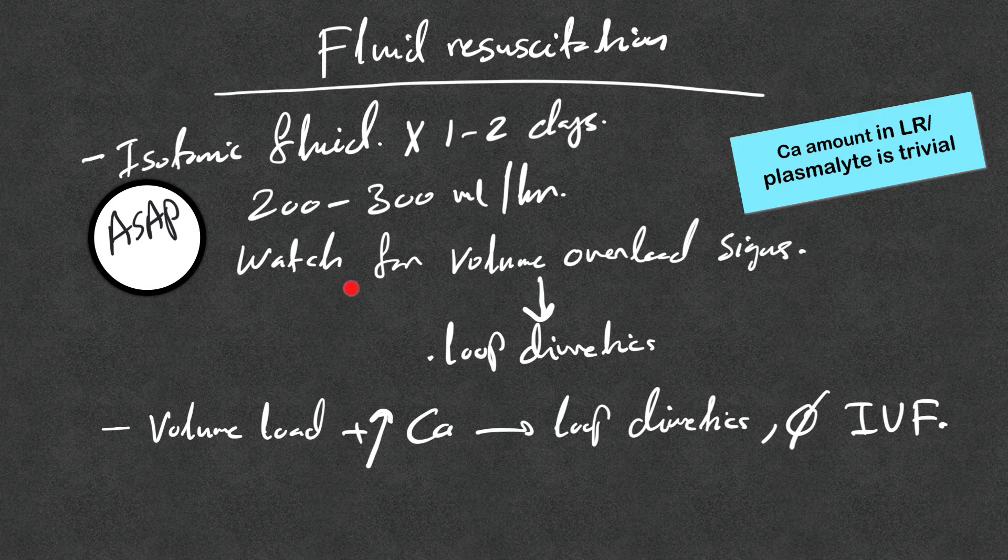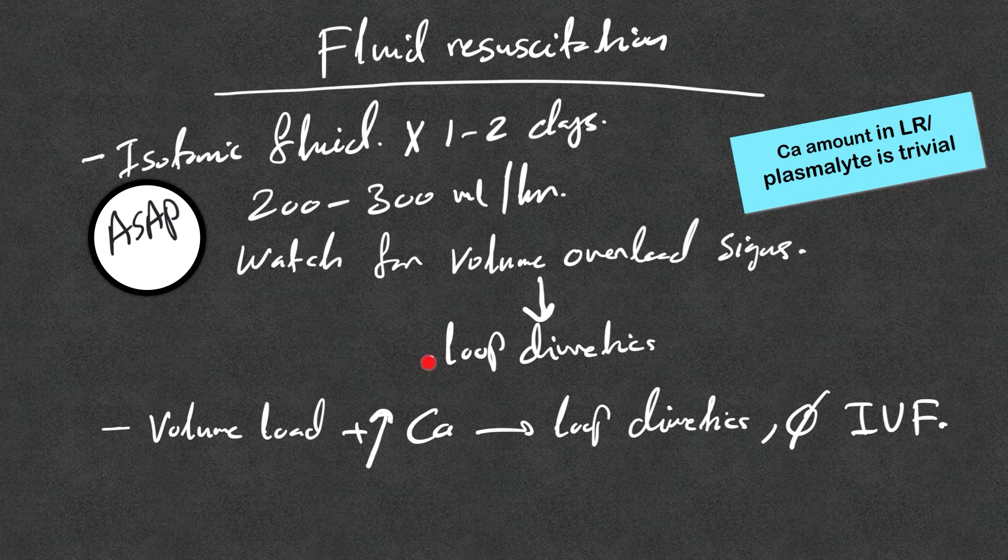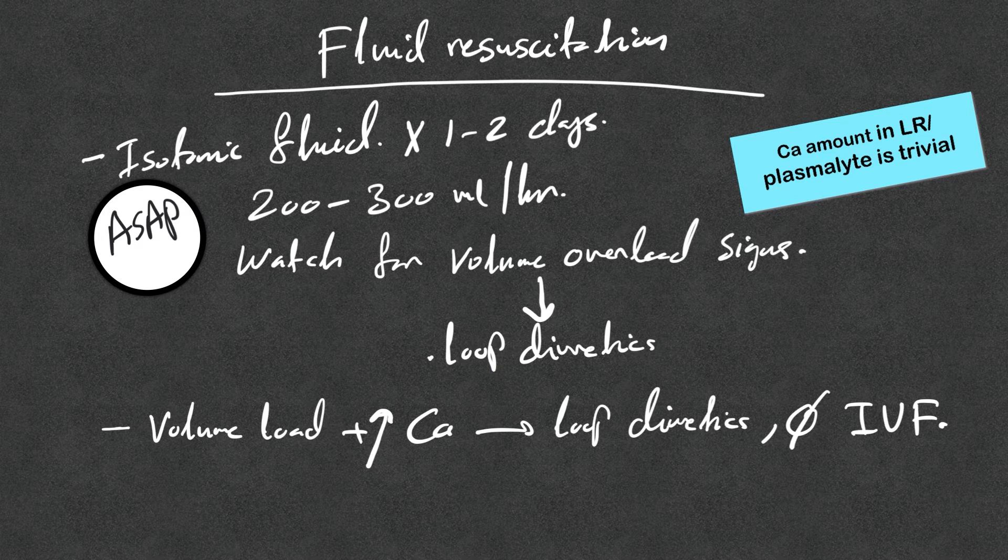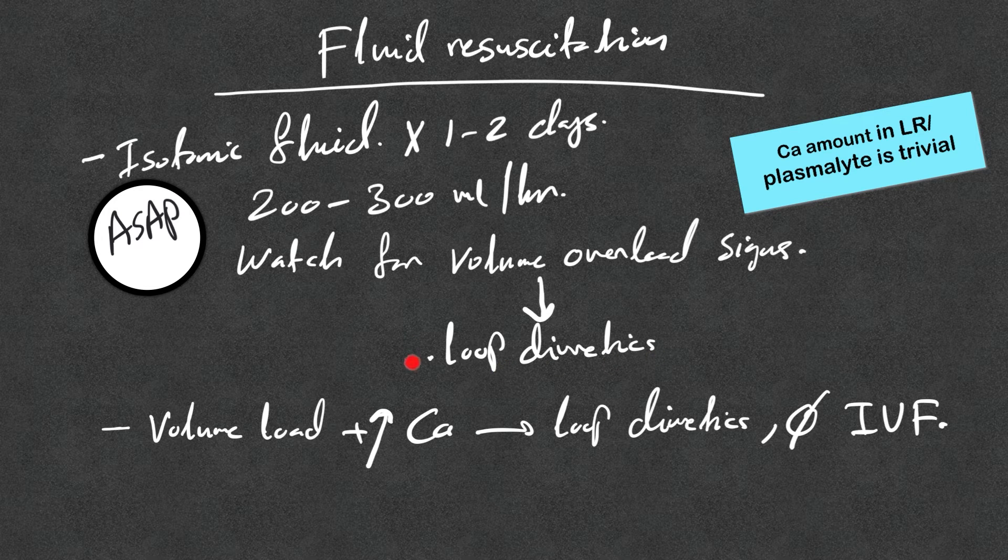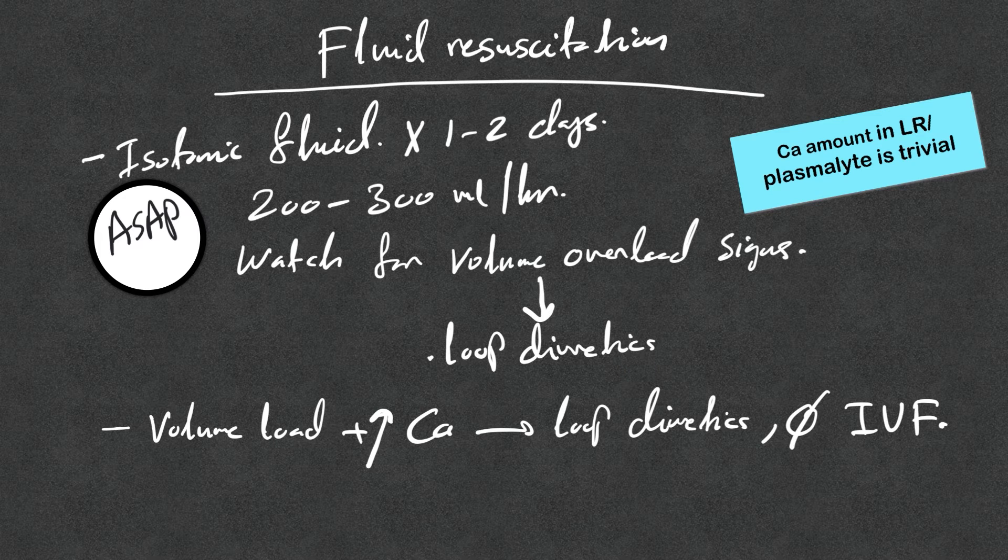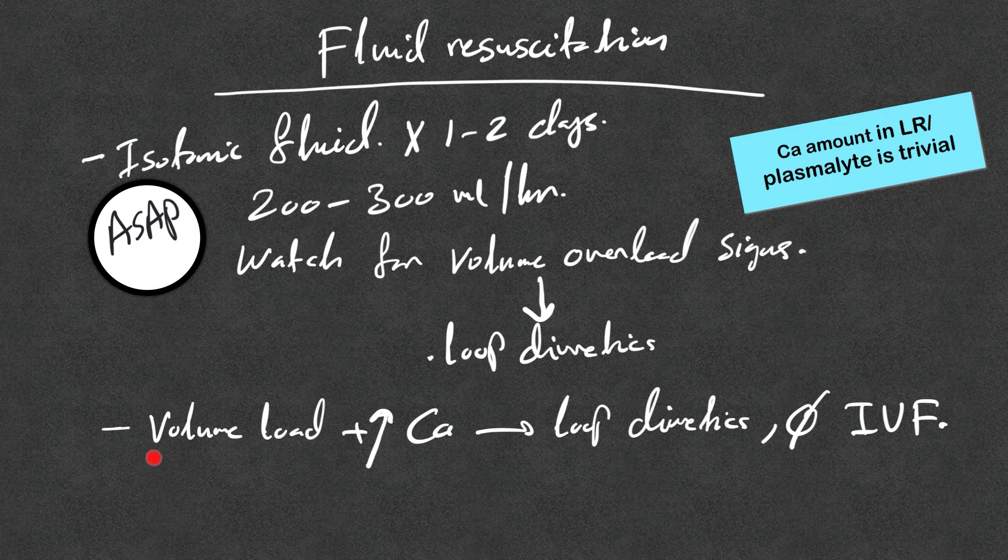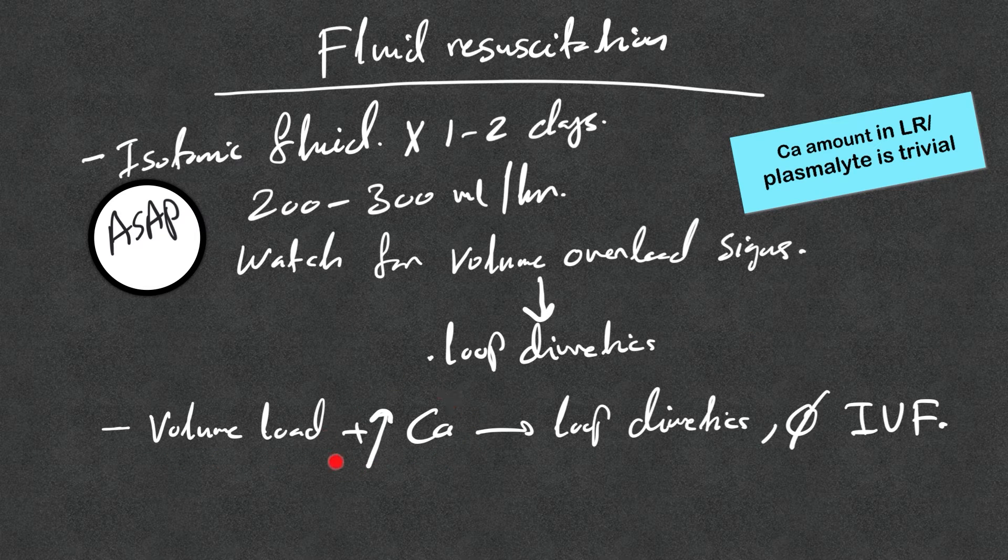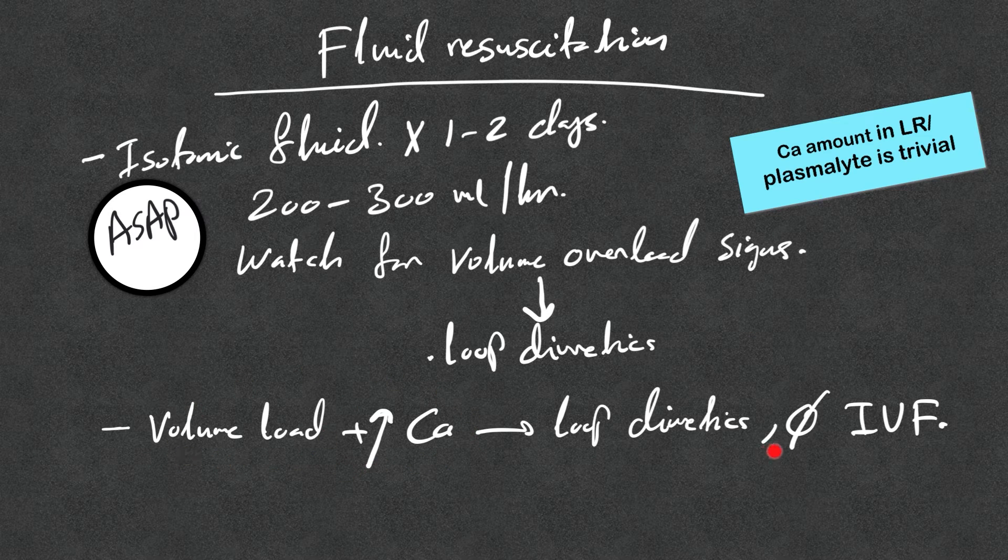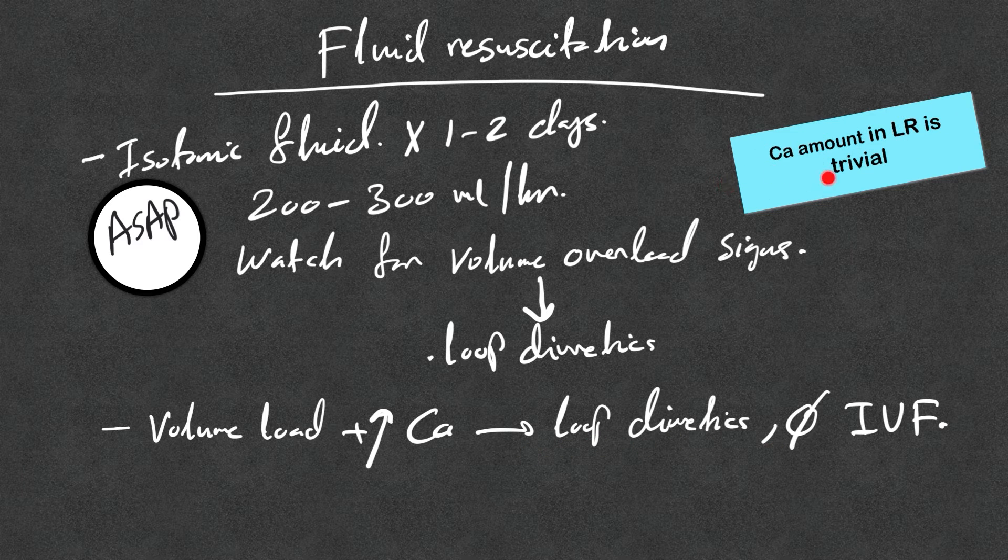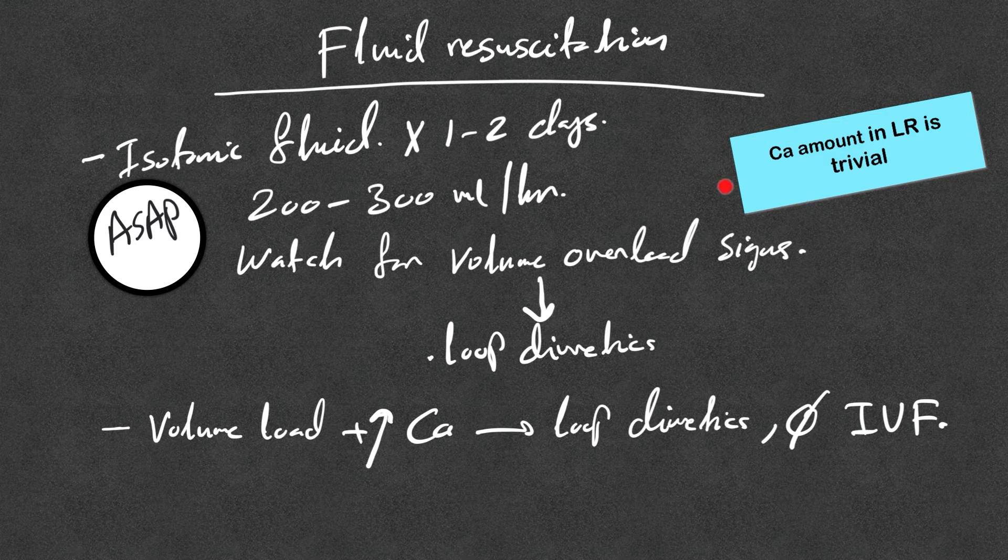If there is any volume overload signs, use loop diuretics. Loop diuretics can increase or enhance the calcium urinary excretion. They used to be a part of the treatment of hypercalcemia, but now with the calcitonin and bisphosphonate, we really don't need to use them. Now, if there is volume overload and hypercalcemia from the get-go, do not use IV fluid and just use loop diuretics. Calcium amount in lactated Ringer is very trivial, so don't shy from using lactated Ringer, although everybody says saline, saline, but I don't see a problem using lactated Ringer as well.